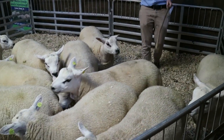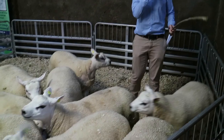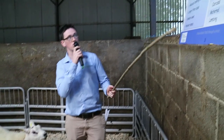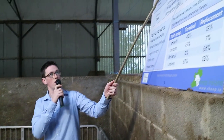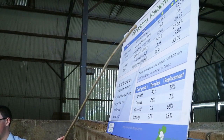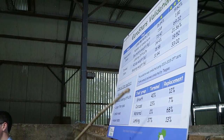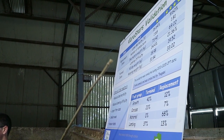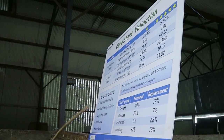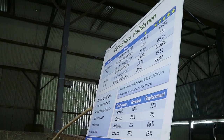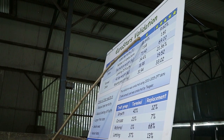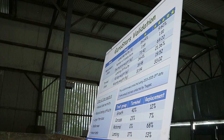We split the data up for the three years of data. So animals that were one star — and these star ratings are before mating, so before any data was included into the evaluation — one star versus animals that were five star.